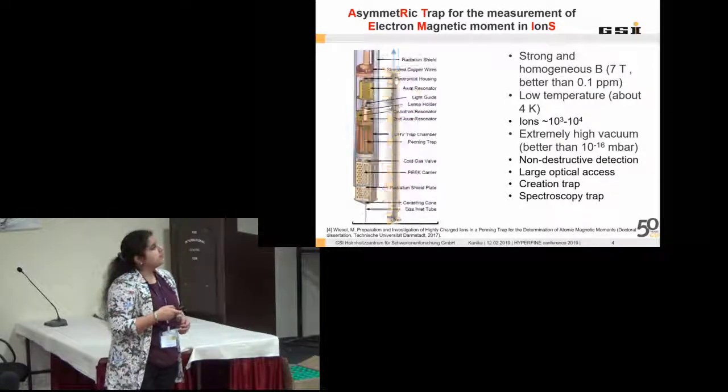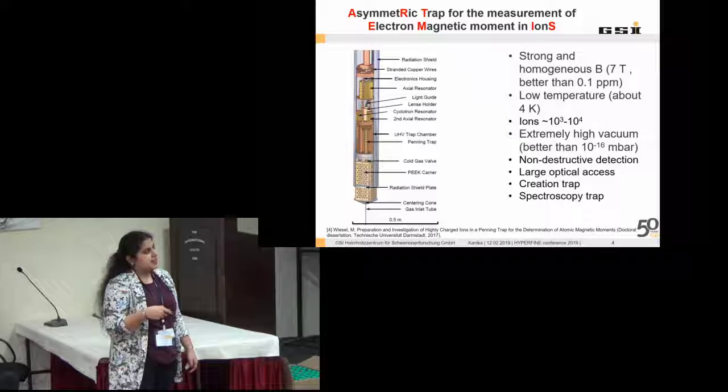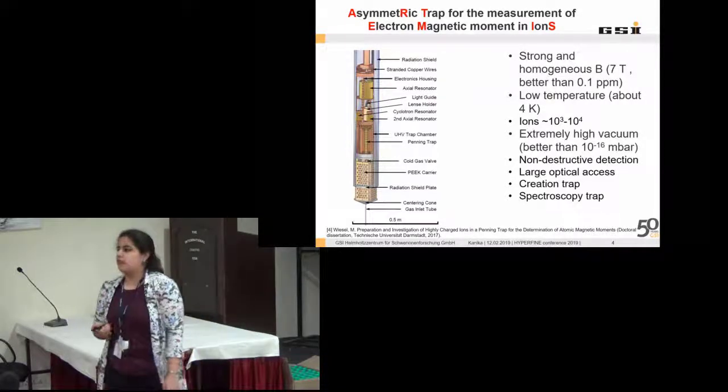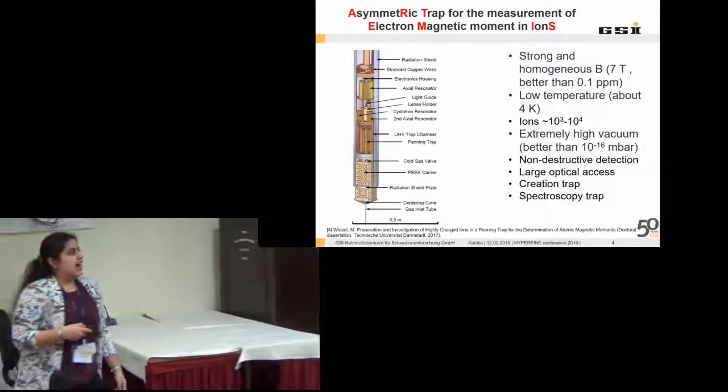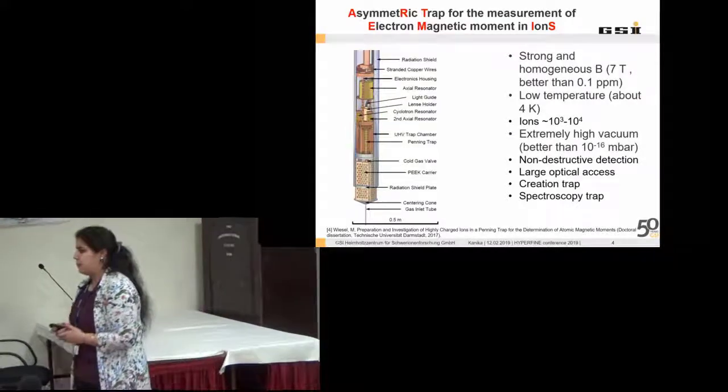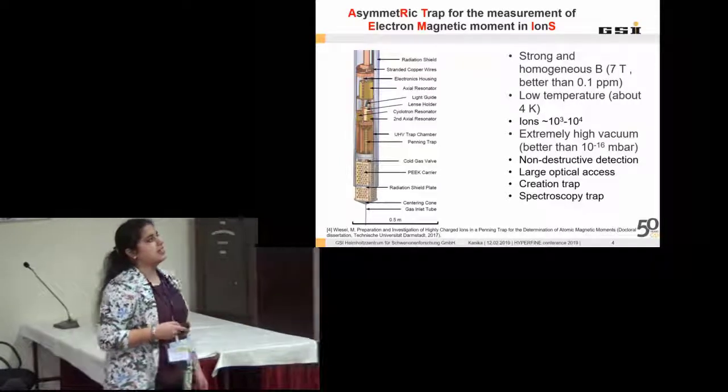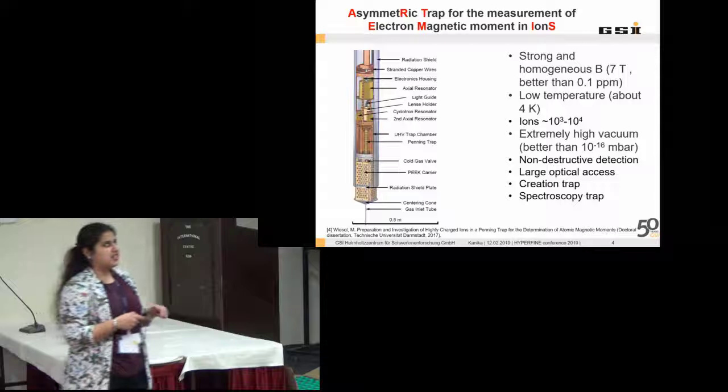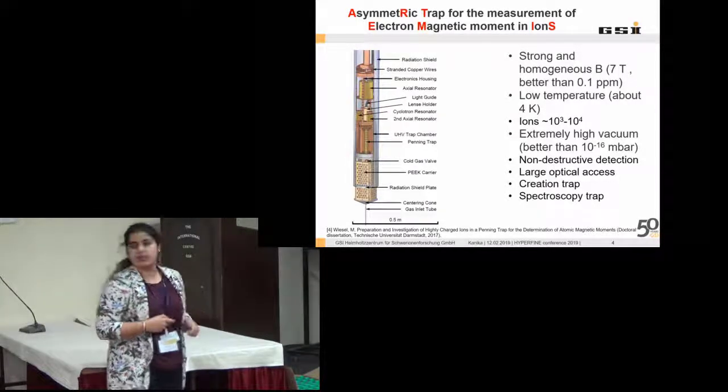This trap now lies in the ultra high vacuum chamber. This is at a vacuum of about 10 to the power minus 16 millibars. This is a radiation shield. We have two stage cooling in our experiment. This radiation shield is at the first stage of cooling, which is at 45 Kelvin, and we have another stage at 4 Kelvin where all this experimental setup rests.